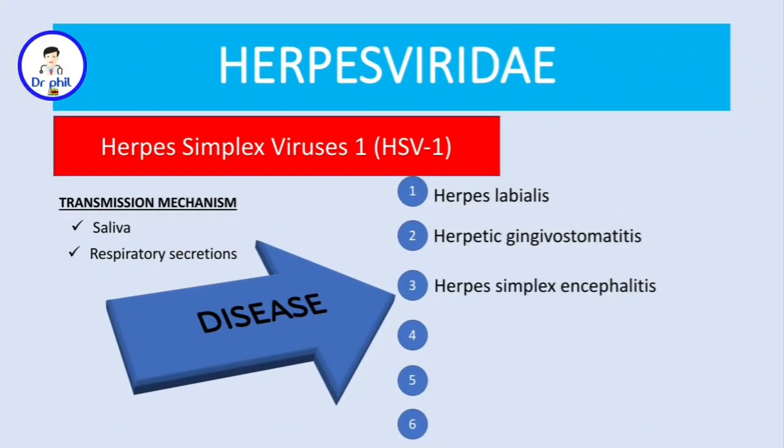The third one is herpes simplex encephalitis. This encephalitis usually causes hemorrhage and necrosis of the temporal lobe in most cases, and also the frontal lobe. This will lead to conditions like seizures, confusion, etc.